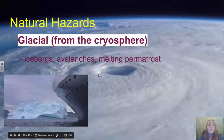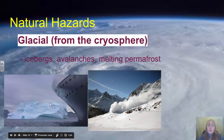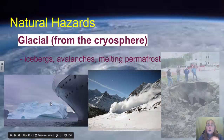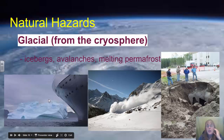We also have natural hazards connected with ice and snow — things connected with the cryosphere. These include dangers from icebergs, dangers from avalanches, and the issues of melting permafrost and the dangers this poses on humans as well as human structures.